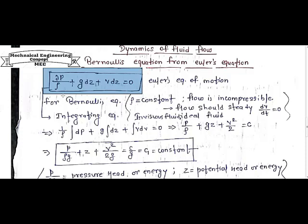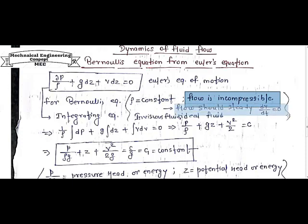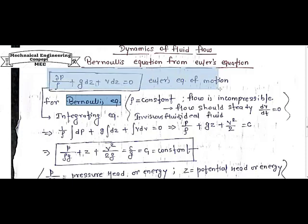For Bernoulli's equation, density of the fluid is a constant, rho is constant, because the flow is incompressible and the flow should be steady so that dv by dt equals zero. Taking rho as constant and integrating this Euler equation.